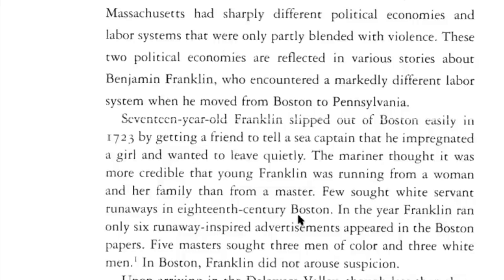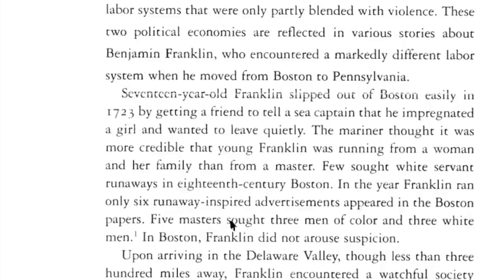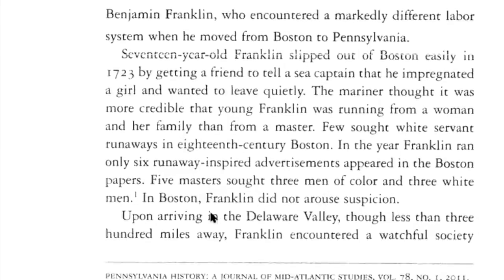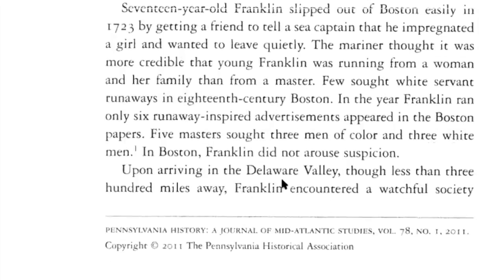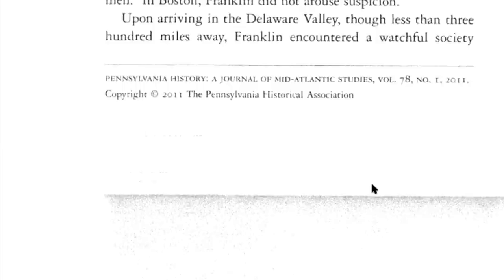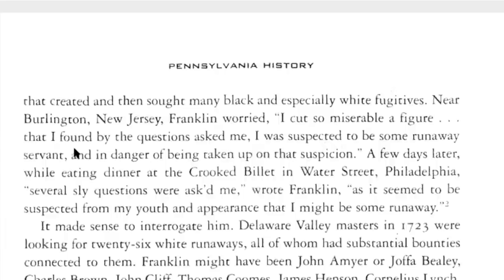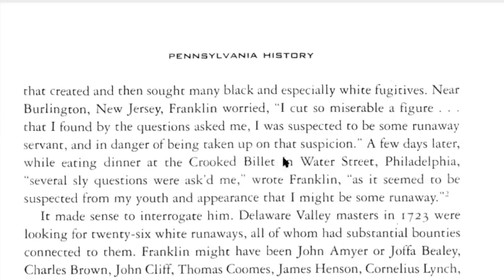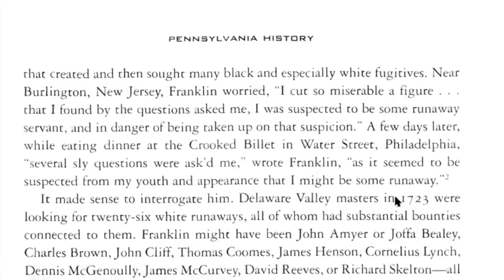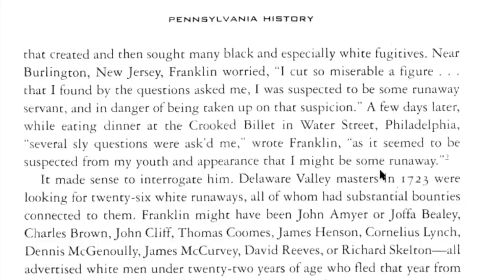It says in 1723, 17-year-old Franklin slipped out of Boston by getting a friend to tell a sea captain that he had impregnated a girl and wanted to leave quietly. The mariner thought it more credible that young Franklin was running from a woman than from a master. He was an indentured servant. He was a runaway. Few saw white servant runaways in 18th century Boston.